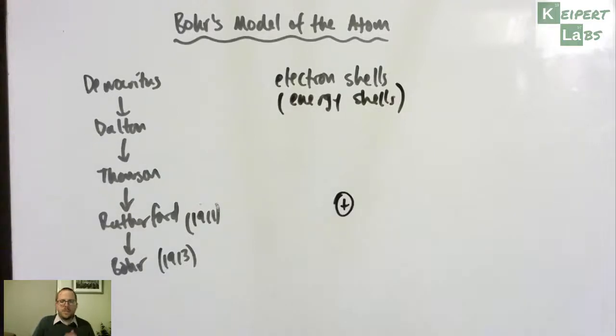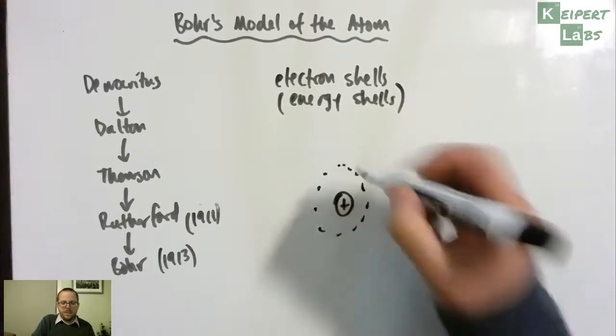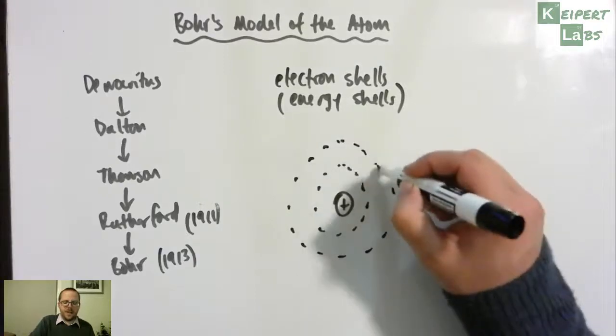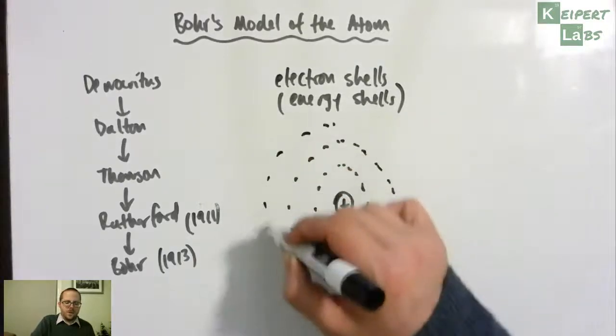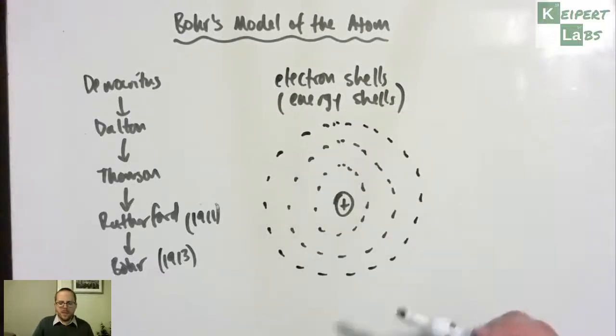If we look at our atom, the positively charged nucleus in the middle and then proposing that around the outside of that atom, there exists a series of layers or spaces where electrons can be found.